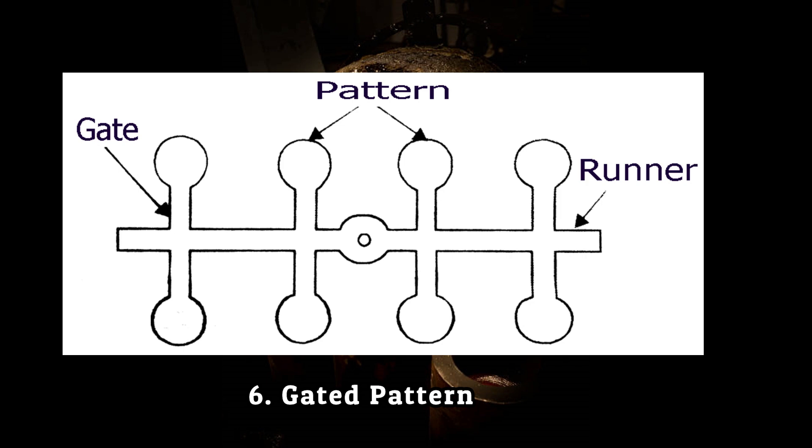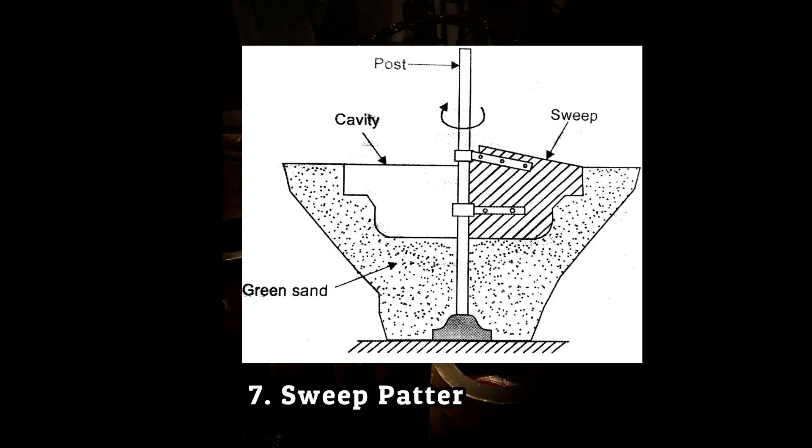Seventh is sweep pattern. These patterns are used for large rotationally symmetrical casting. A sweep is a section of a large symmetrical object which is rotated along an edge into sand which makes a large symmetrical mold. These patterns make easy pattern making work of large objects.